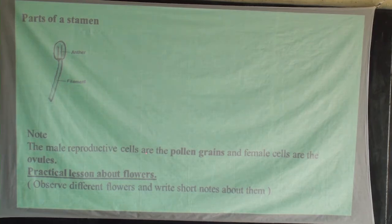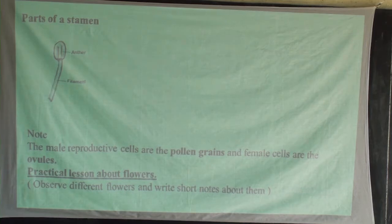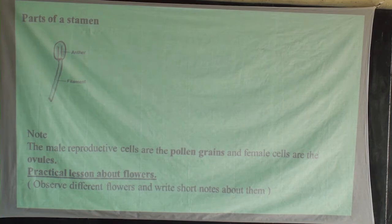The male reproductive cells are the pollen grains, and the female cells are the ovules. You can be asked: what name is given to the male gametes? Those refer to pollen grains; and the female reproductive cells refer to ovules — that is, in plants.